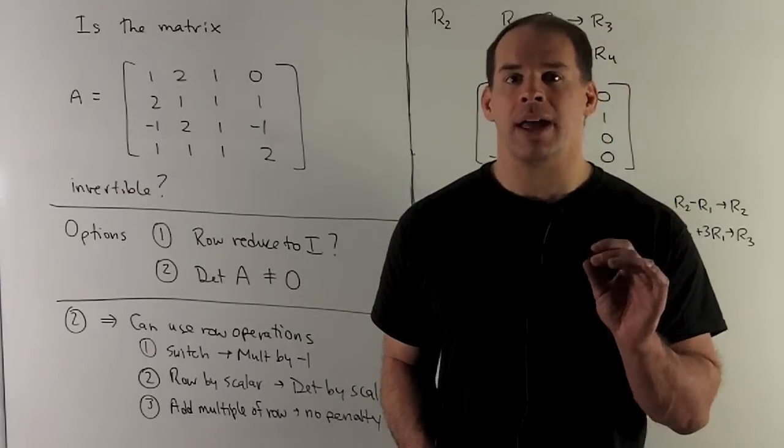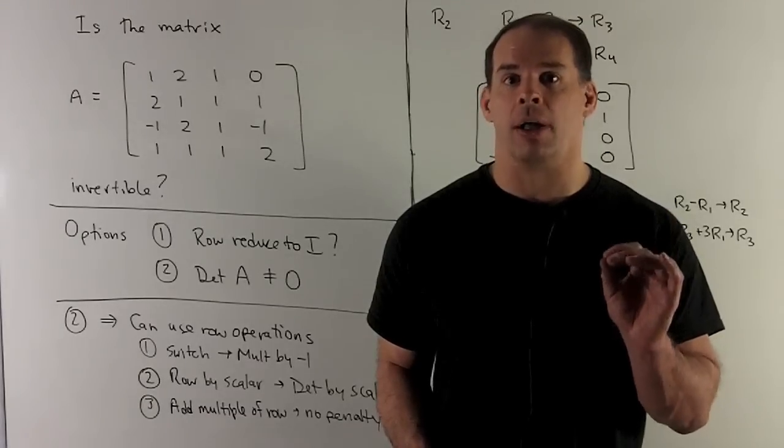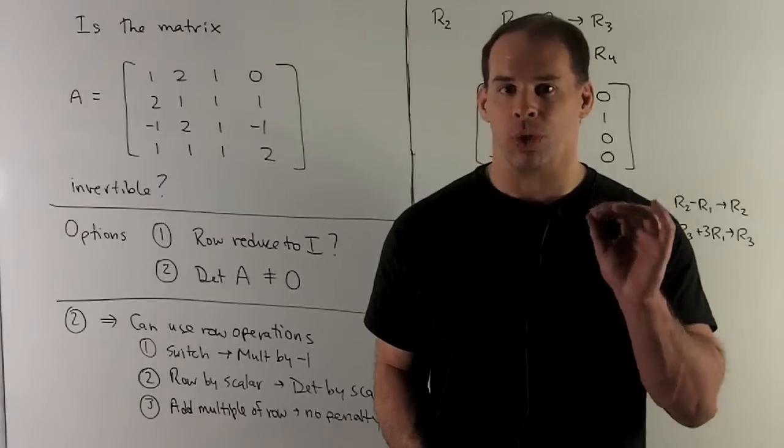And then, if I take any row, add a multiple of another row, that's going to have no effect on the determinant at all. So we're going to get a lot of mileage out of rule 3.